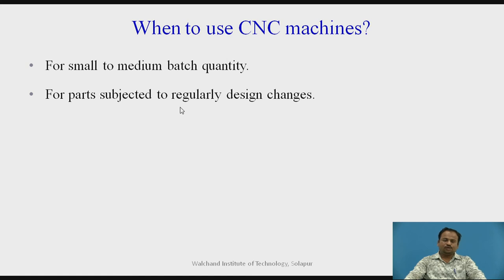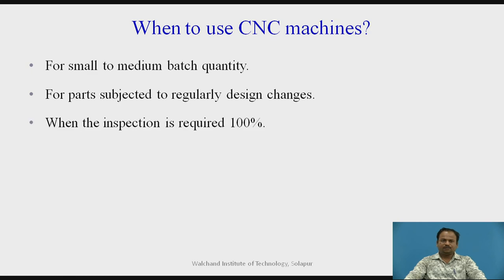For parts subjected to regular design changes — if you want to make certain changes in the design, you can make those design changes in the program and apply them to the machine, and you will get the required object reflecting those changes. When 100% inspection is required, such as for parts needed in the defense sector or aerospace industry, we need to go for CNC only, where we will get accurate parts because the machine is totally programmed and there are fewer chances of failure.